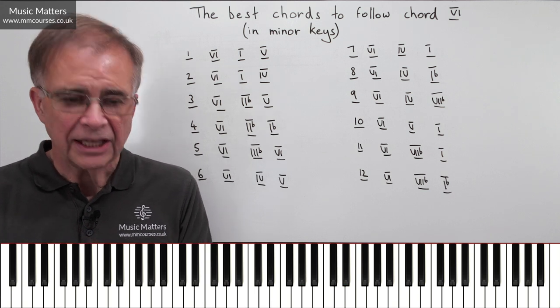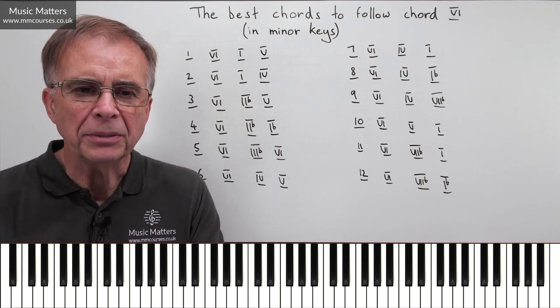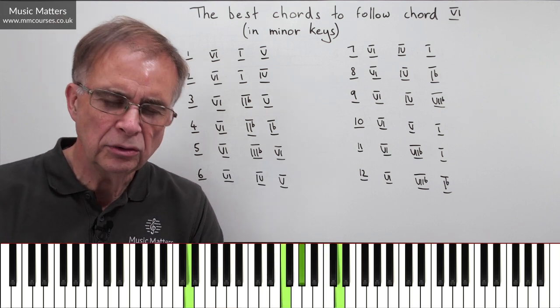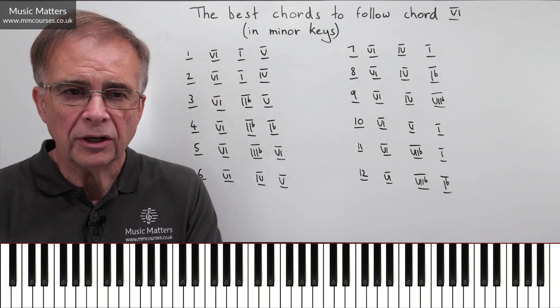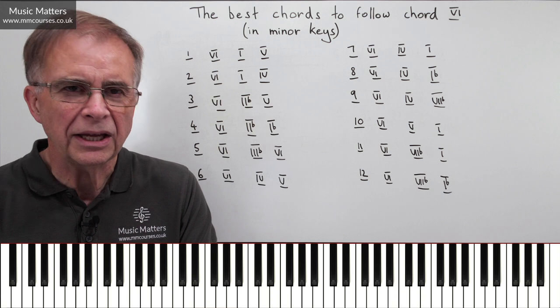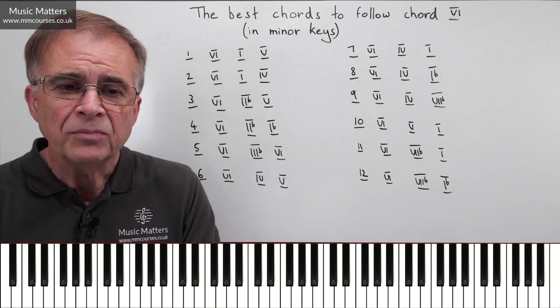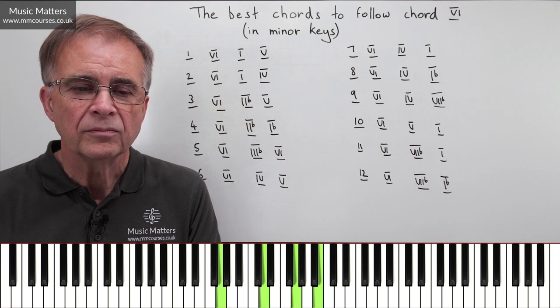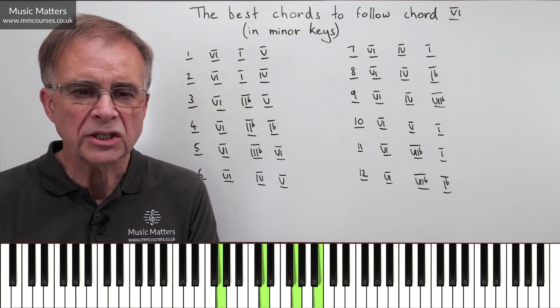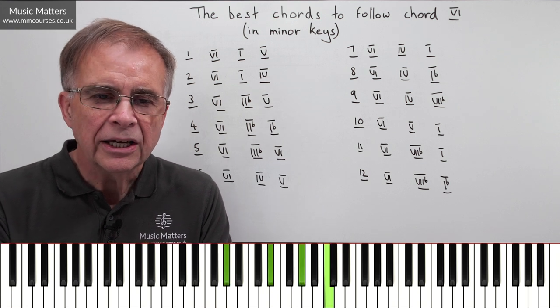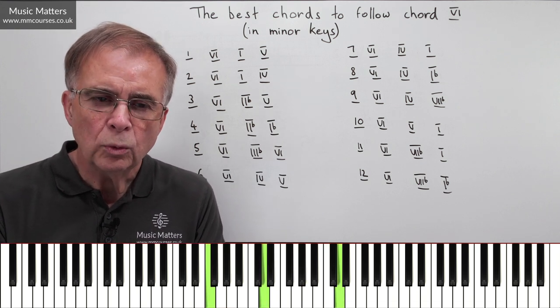And it also in this case helps the bass line a bit, because if you go from VI to II, you've also got the tritone leap in the bass. So if you go from VI to IIb, the bass line is a bit calmer, isn't it? So VI to IIb to V is actually quite a good progression, isn't it?